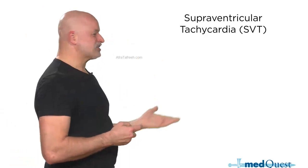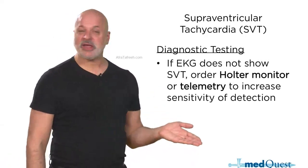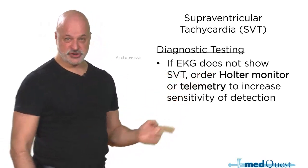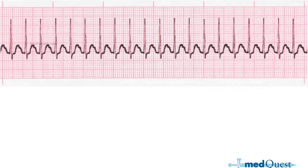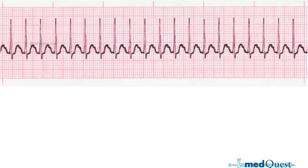Will you shock SVT if it is unstable? Yes — and the criteria for instability are the same as for AFib or flutter. The diagnostic test, like all arrhythmias, is an EKG, and if negative, ambulatory Holter or inpatient telemetry. SVT shows a very distinct pattern — a narrow complex tachycardia with QRS less than 100 milliseconds, no P waves, no fibrillatory waves, no flutter waves.